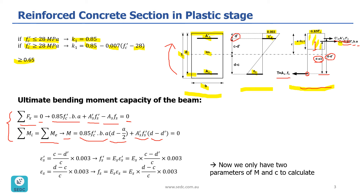We will use the same approach as in previous stages. Instead of using f prime s and f_s, which are stresses in the steel reinforcement in compression and tension, we use the formula E times epsilon. So E_s times epsilon prime s for compression, and E_s times epsilon s for tension. Then the next step is further simplifying by expressing the steel strains as a factor of the concrete strain. Since the concrete strain is 0.003, this makes the formula much simpler to solve.